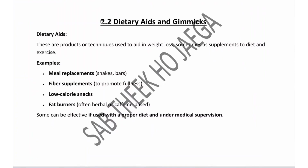The next topic of Unit 2 is Dietary Aids and Gimmicks. What are Dietary Aids? These are products or techniques used to aid in weight loss, sometimes as supplements to diet and exercise. For example: meal replacement shakes, fiber supplements to promote fullness, low-calorie snacks, fat burners, herbal green tea, and caffeine-based fat burners. Some can be effective if used with proper diet and under medical supervision.